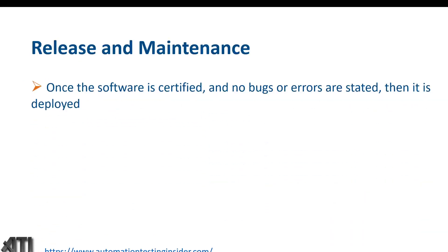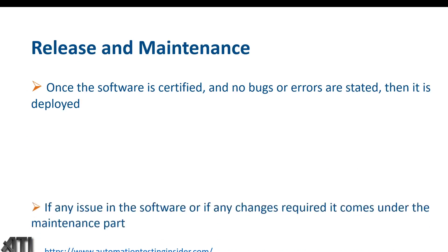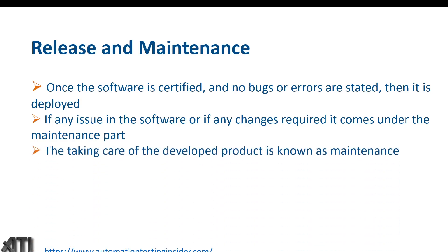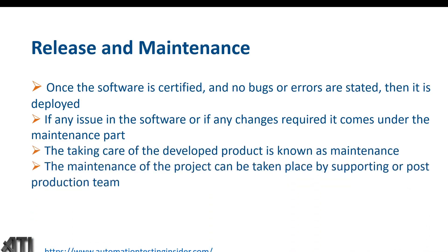In the release and maintenance phase, once the software is certified and there are no bugs or errors, it is deployed into production. If any issues arise or changes are required — for example, the customer comes back with further requirements or wants to change something — that comes under maintenance. Taking care of the developed product is known as maintenance, handled by the post-production support team.